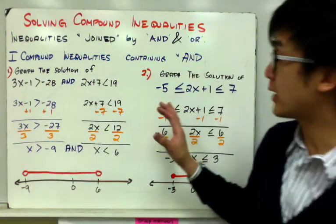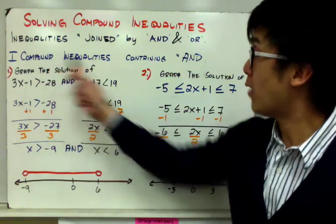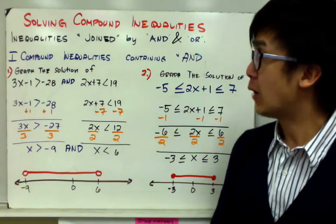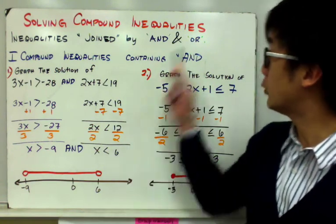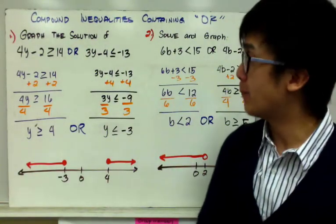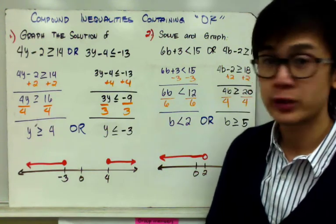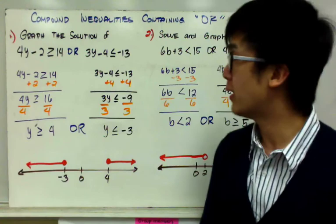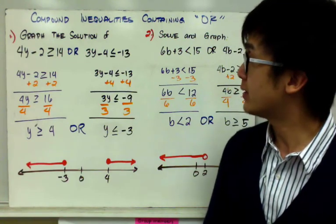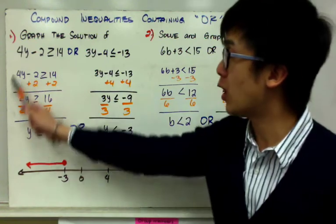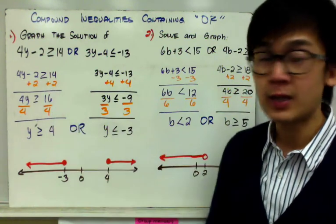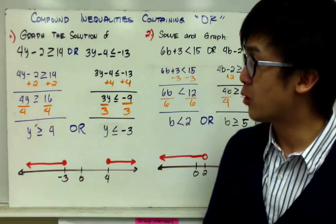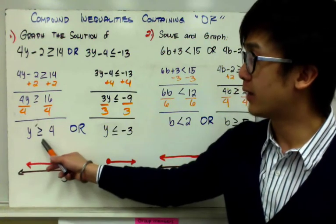Both examples are compound inequalities containing the AND operation. Now let's solve a different type — compound inequalities using the OR operation. My first example is: 4y minus 2 greater than or equal to 14, or 3y minus 4 less than or equal to negative 13. I'll solve the first inequality: add 2 on both sides and divide both sides by 4, giving y greater than or equal to 4.